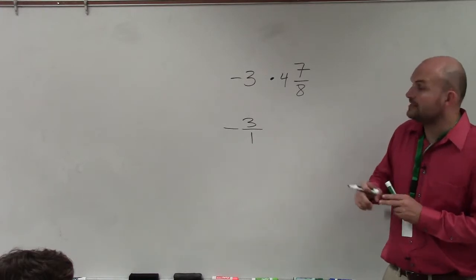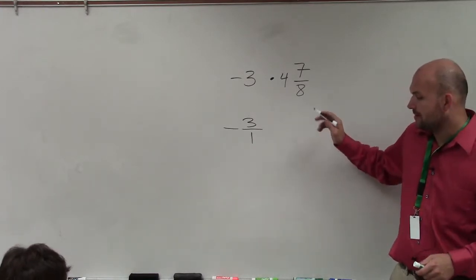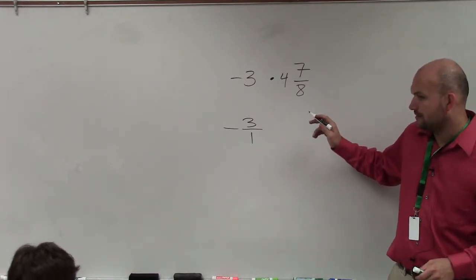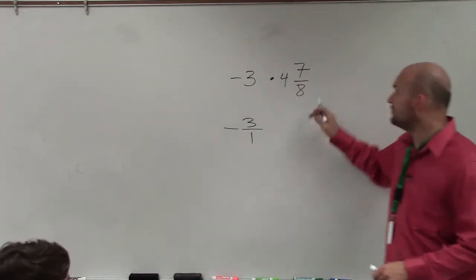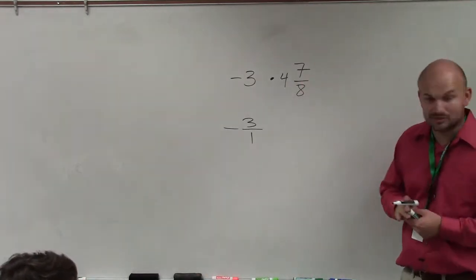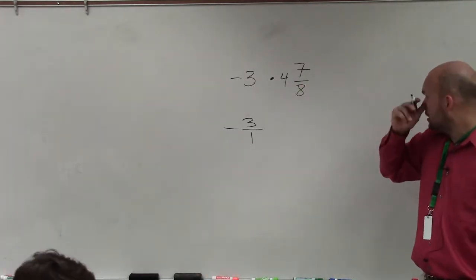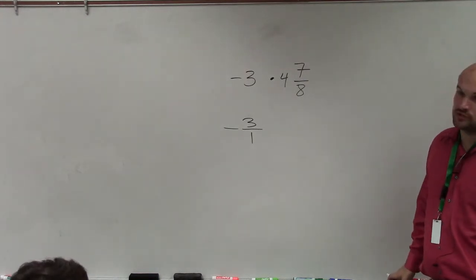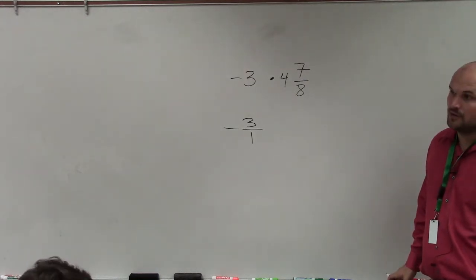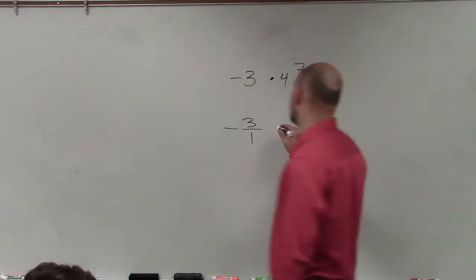Now I need to convert my mixed number to a fraction. So I do 8 times 4, which is 32, and then plus 7, which is 39.